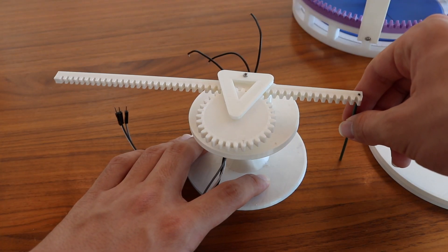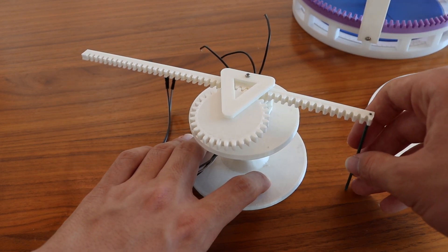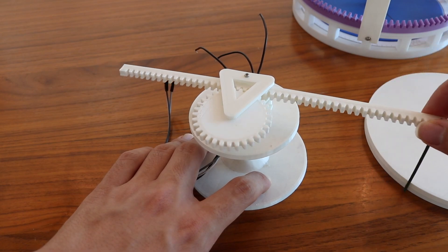Since we use this pointer to trace the curve that we want to find the area of, the radius at any point in time can be measured by the movement of this rack.